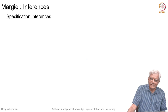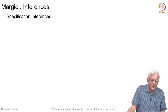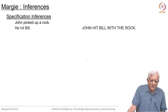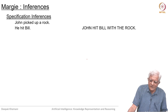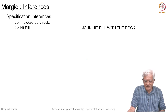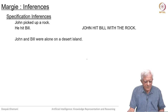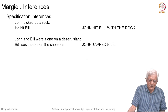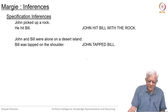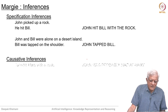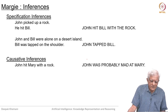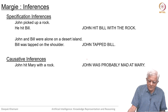What are the different kinds of inferences that Marji could make? One is specification inferences: John picked up a rock, he hit Bill — the inference is he hit Bill with the rock. John and Bill were alone on a desert island, Bill was tapped on the shoulder — inferred: John tapped Bill. Causative inferences: John hit Mary with a rock, John was probably mad at her.